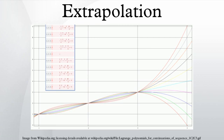Conic extrapolation: A conic section can be created using five points near the end of the known data. If the conic section created is an ellipse or circle, it will loop back and rejoin itself. A parabolic or hyperbolic curve will not rejoin itself but may curve back relative to the x-axis.